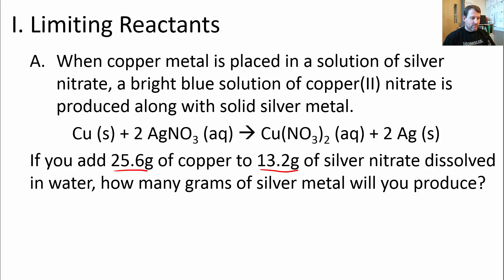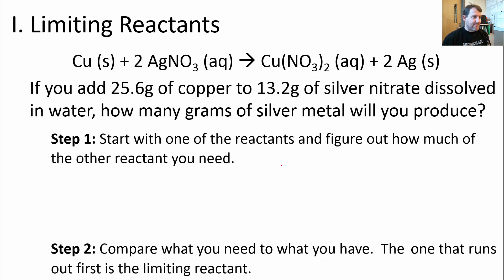The big idea here is we're going to start with one of the reactants — either the copper or the silver nitrate — and figure out how much of the other one we need to use the first one up. Once we know how much we need, we compare it to how much we have. To do a limiting reactant problem, it's a two-step approach. Step one: start with one of the reactants and figure out how much of the other reactant you need. Let's start with copper.